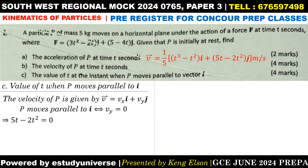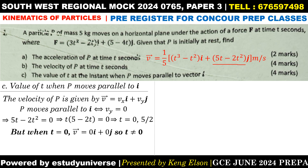Going back to the velocity expression, we equate the j component to zero. The j component is 5t minus 2t², which when set to zero and factorized gives t(5 minus 2t) = 0, yielding t = 0 or t = 5/2. When t equals zero the particle was at rest, so it was not moving and we discard that solution. Therefore the time at the instant when the particle moves parallel to the vector i is 5/2 seconds. If instead it were moving parallel to vector j, we would equate the i component to zero.